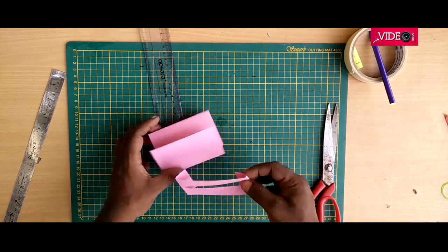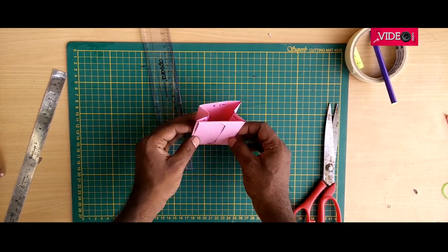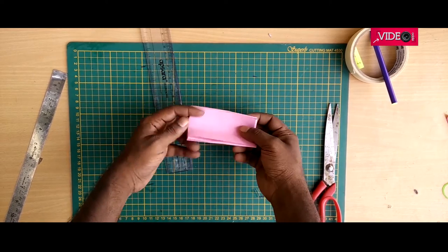Now use the smaller strip to secure the larger strip as shown. Compress it well and fold the whole thing in half as shown.